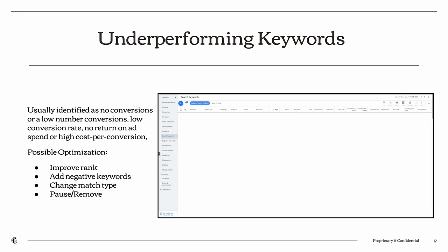Now for the flip side — identifying underperforming keywords so you can trim the fat. Using the same benchmark — say 10% conversion rate — look at keywords currently below that threshold and optimize accordingly. You can also look specifically at keywords that haven't converted at all but continue to spend money, and start cutting those out where it makes sense.